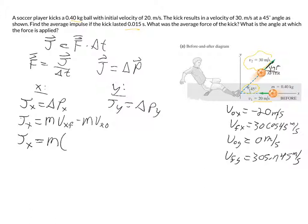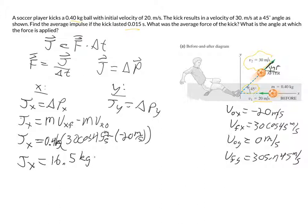So in the x direction, we have mass multiplied by v final, which is 30 cosine 45 minus v initial, which is negative 20 meters per second. I'm going to substitute in the value of 0.4 kilograms. And so we can calculate our x impulse to be equal to 16.5 kilograms times meters per second.